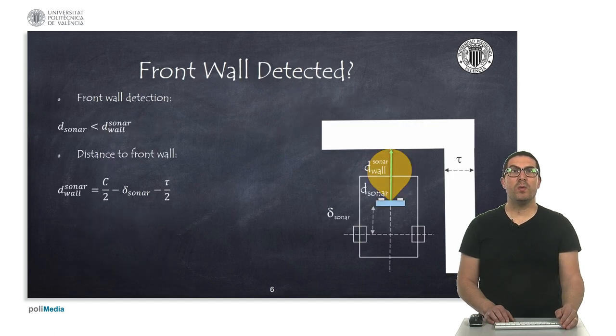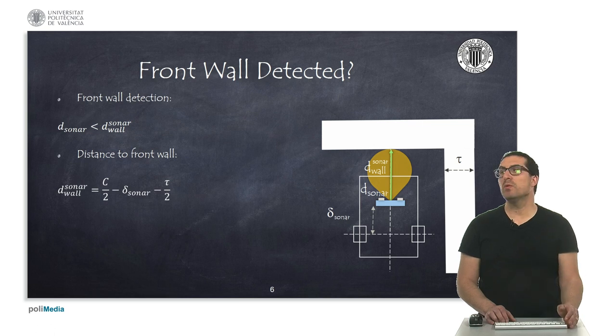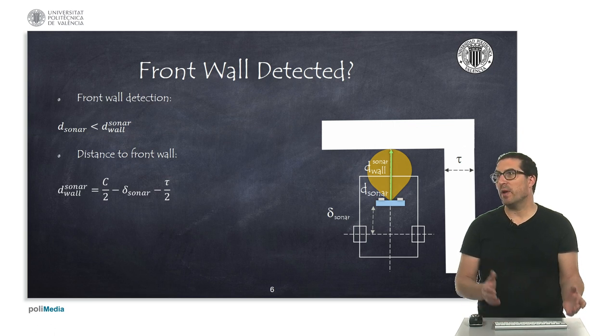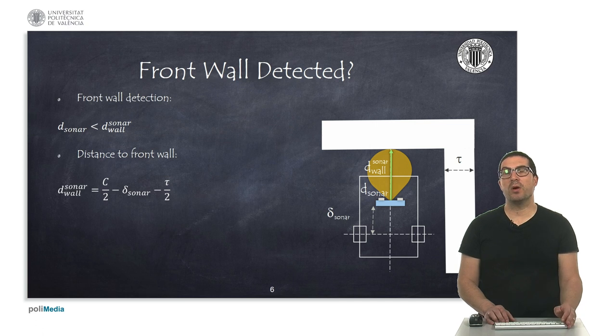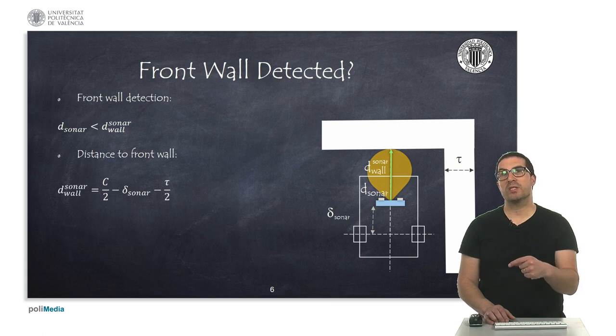When following a wall, we might find a corner, like the one shown. This can be easily detected with the ultrasonic sensor. If we detect that the ultrasonic sensor distance is smaller than the expected distance, then we have detected a wall. This expected distance can be actually known in advance if we know the size of the cell and the thickness of the wall, in this case, indicated with the letter tau, and the separation of the ultrasonic sensor with respect to the wheel basis indicated with the letter delta.